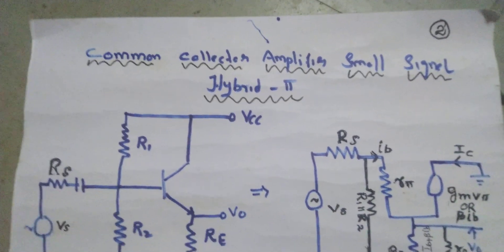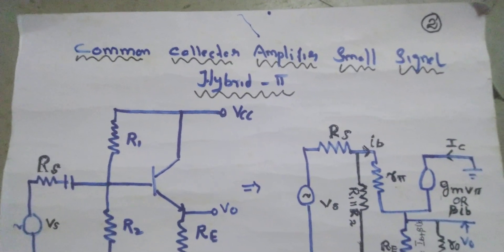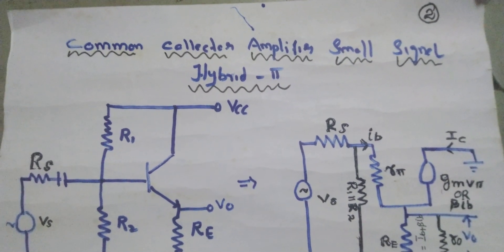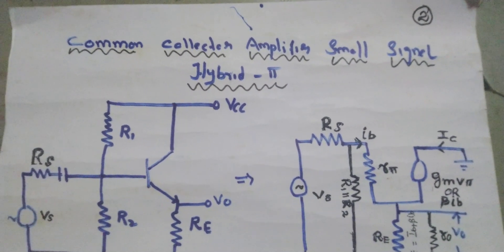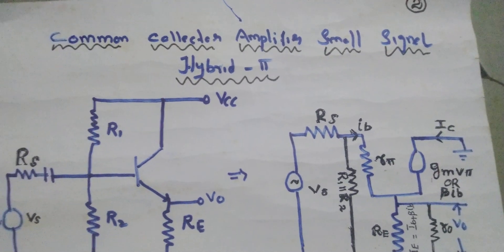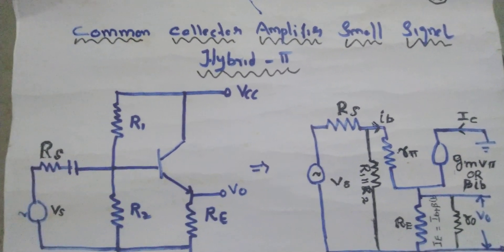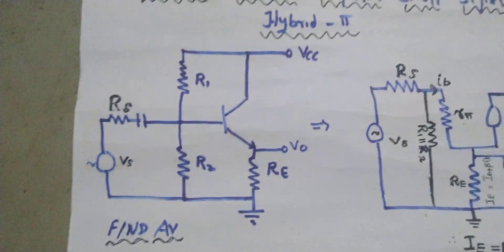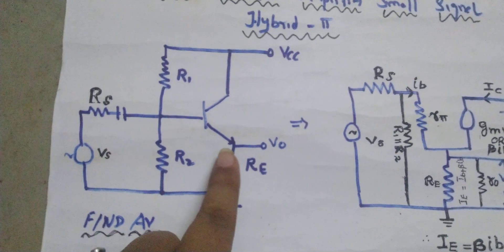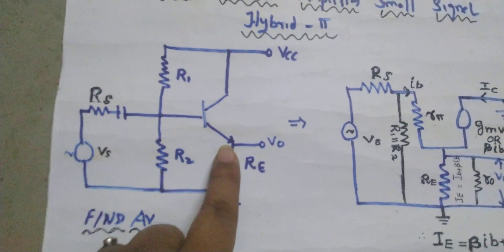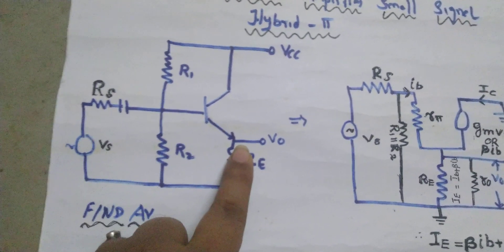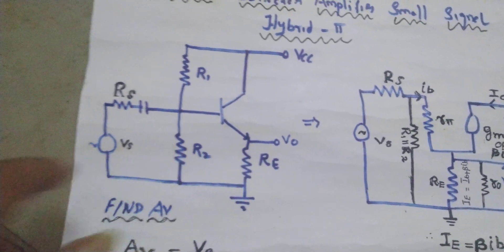Good evening students. This is one of the important questions from the second unit of EC1: Common Collector Amplifier — specifically, the small signal analysis of a common collector amplifier using the hybrid pi model. This is a common collector configuration. It is called common collector because the output is taken at the emitter terminal.